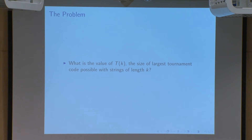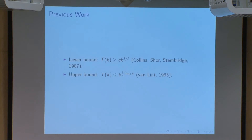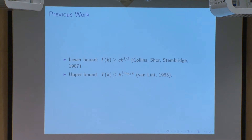This leads to the natural question: since the property of comparability is so restrictive, what is T(k) — the size of the largest possible tournament code with strings of length k? Some previous work has been done on this problem. In 1987, Collins, Shore, and Stembridge proved a construction giving an asymptotic lower bound of k to the three-halves. Additionally, in 1985, Van Lint showed that k to the one-half times log base two of k is an upper bound on the largest possible size of a tournament code.